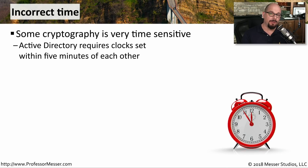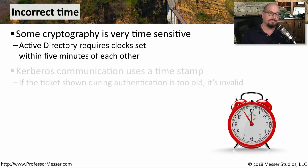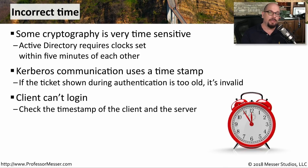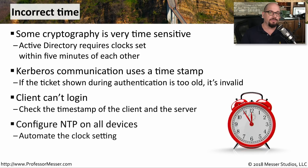Configuring the date and time on all devices on your network becomes very important when implementing security. For example, the default tolerance for Kerberos is a five-minute window, so you need very tight tolerances on time and date across all devices. Kerberos assigns you a ticket with a timestamp — if that timestamp is too old, Kerberos considers the ticket invalid and your client can't log in. When there's a problem with Kerberos login, check the timestamp on the device trying to gain access. The easiest solution is to configure all devices with Network Time Protocol, or NTP, so every device automatically updates its clock and stays in sync.